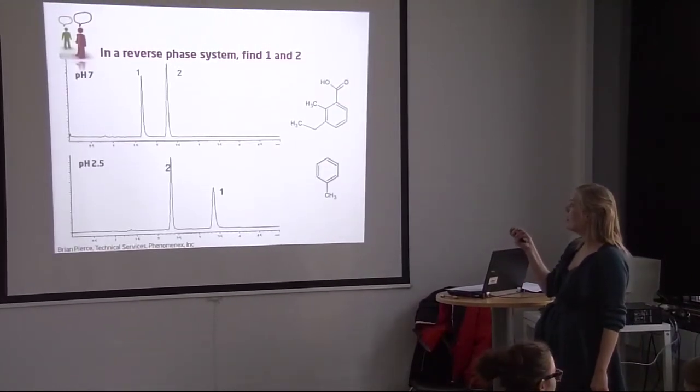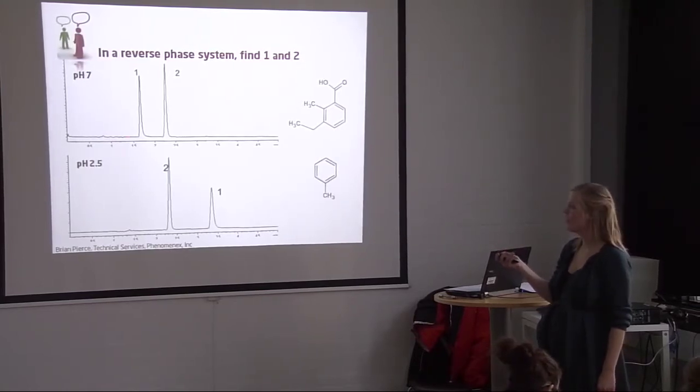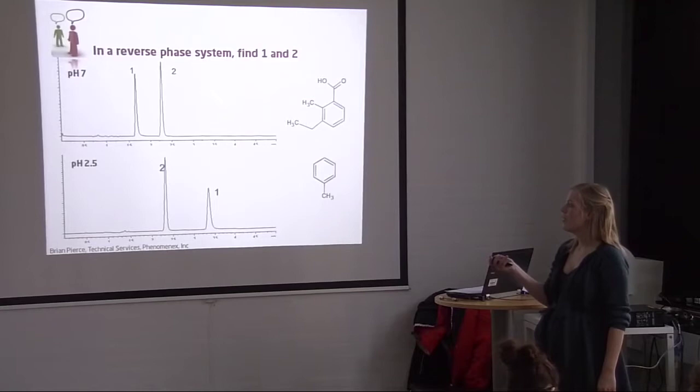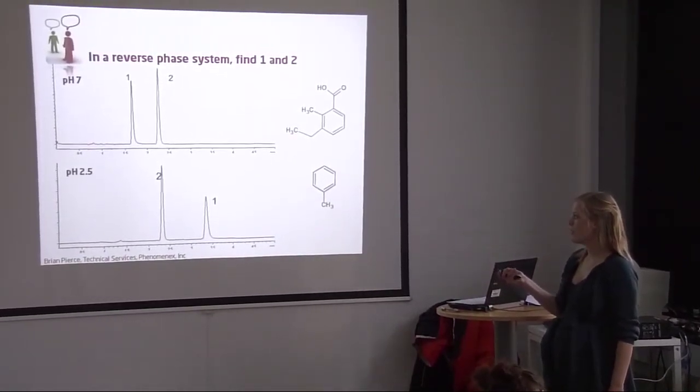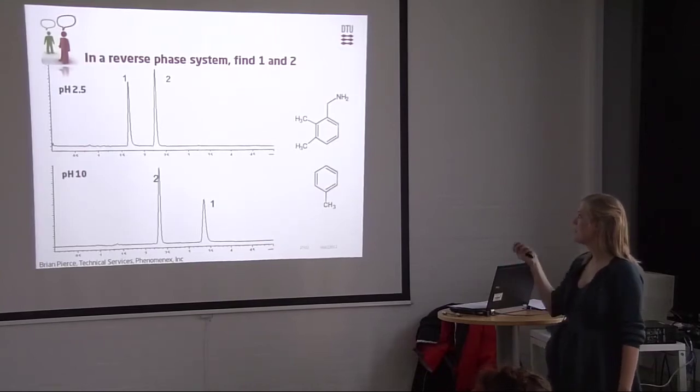Then you got a compound with a carboxylic acid which will be charged at pH 7, making it more polar, and it will be protonated at low pH making it more apolar.